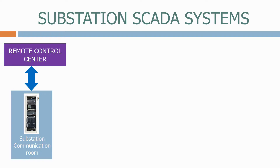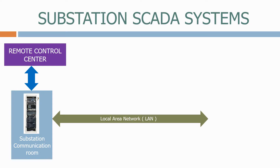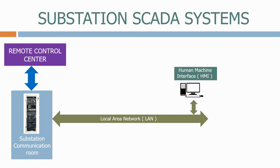Connecting to the communication room, we have a local area network or LAN. This connects all the computer systems together inside the substation. To the LAN we connect many devices including the human machine interface or HMI. This is the PC or laptop that is used by the substation operators to control the equipment and monitor the alarms and systems.